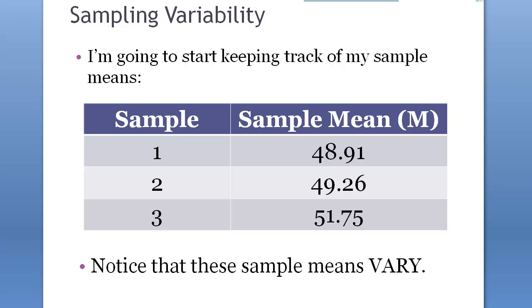Taking samples from different portions of the population still yields very similar characteristics. But because it's just a part, not the whole population, the value is going to be different in most cases. These are acceptable marginal errors because they come from the same population and these differences are expected.